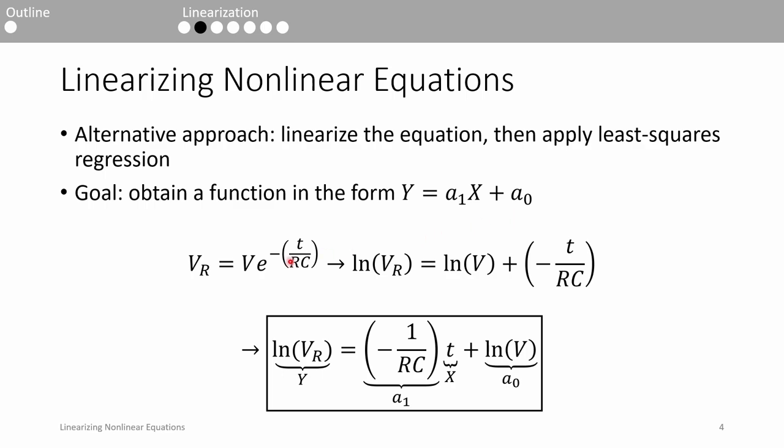For example, we know that the resistor's voltage equals the battery's voltage multiplied by a decaying exponential term. This is nonlinear because T, the independent variable, is encased within the exponential term. If we move T outside the exponential, we should get a linear equation. If we take the natural log of both sides, we get ln of VR equals ln of V plus negative T over RC.